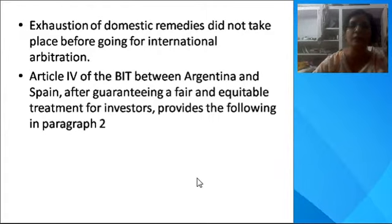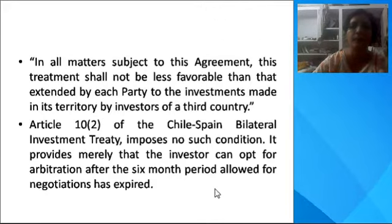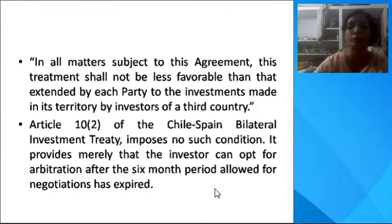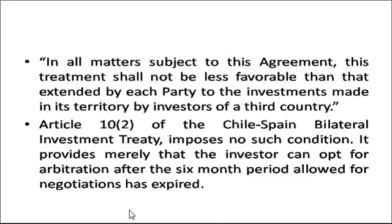Mafezini claimed that ICSID has jurisdiction because Article 4 of the Argentina-Spain BIT provides Most Favored Nation treatment, and Article 10 of the Chile-Spain BIT did not have any provision requiring exhaustion of local remedies before proceeding to an international tribunal. Hence, on the basis of Article 10, clause 2 of the Chile-Spain BIT and Article 4 (the MFN clause) of the Argentina-Spain BIT, Mafezini claimed that ICSID has jurisdiction in this case.